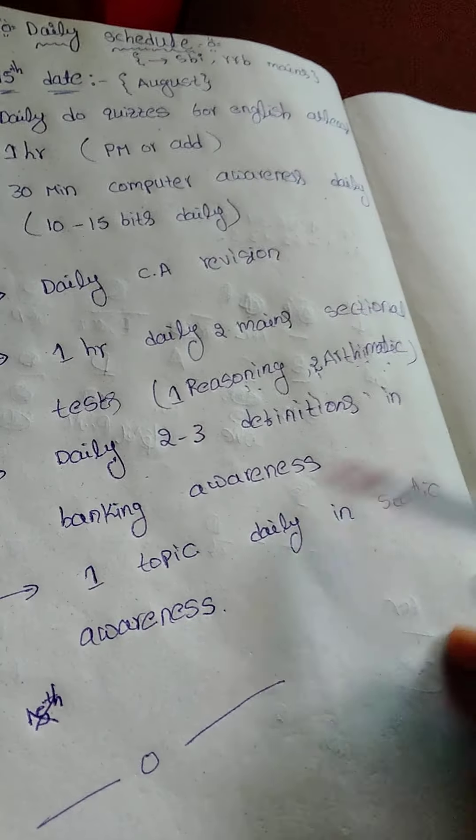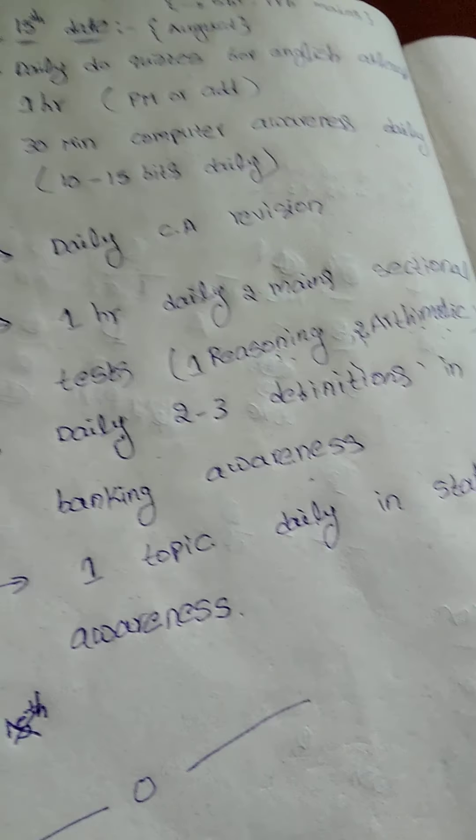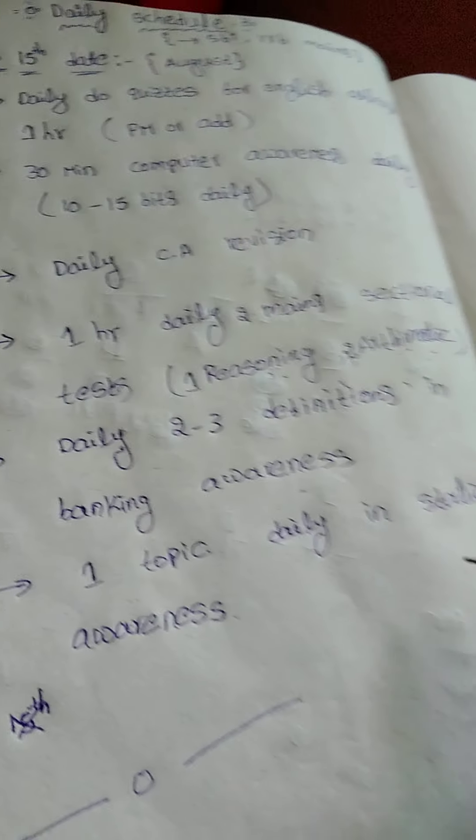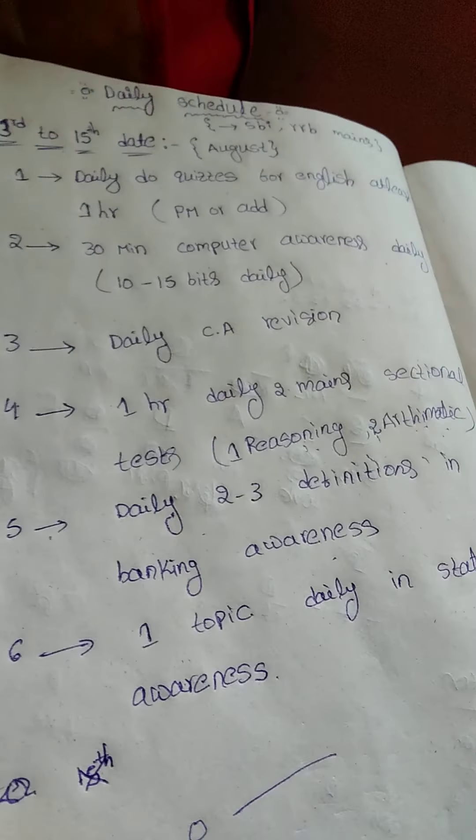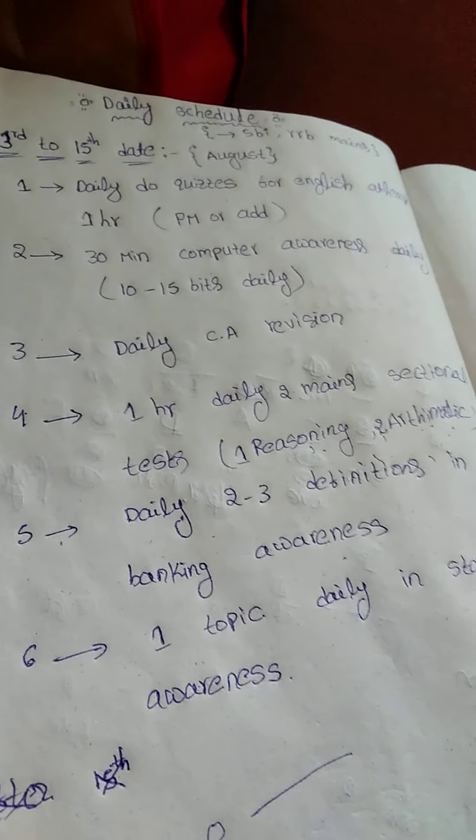The sixth step is one topic of static awareness per day. For example, headquarters could be today's topic, and tomorrow you move on to another topic while also revising the previous day's topic. This is how static awareness is handled in the schedule.